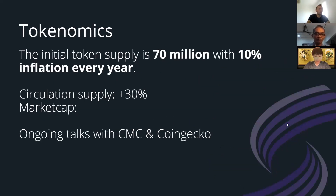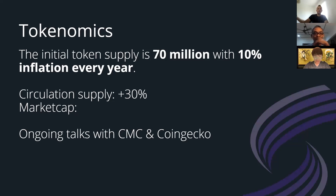Another question was about our tokenomics. A lot of new community members are asking about tokenomics — what is the circulating supply, what is the market cap, and so on. The initial token supply is 70 million, but there is 10% inflation every year, so the total supply of Shiden tokens will increase every year. At every block, extra tokens are minted. The circulating supply at this stage is over 30%.